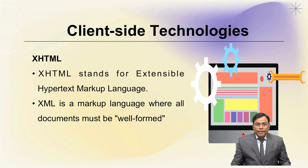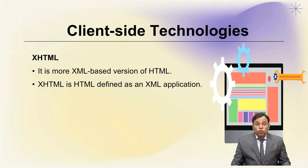Next is XHTML. XHTML stands for Extensible Hypertext Markup Language. XHTML is a markup language where all documents must be well-formed. It is a more XML-based version of HTML. XHTML was created to make HTML more editable and extendable so that it could interact with other data types such as XML.